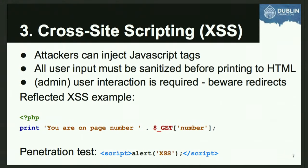Number three on the OWASP Top 10, and one we'll spend time on, is cross-site scripting - the absolute most frequent vulnerability in Drupal, especially before Drupal 8. Probably half of all module vulnerabilities fall into this category. Cross-site scripting means the attacker is able to inject JavaScript tags or object tags that run code into your page content. The way to protect against it is that untrusted user data must be sanitized and escaped before it's printed out.